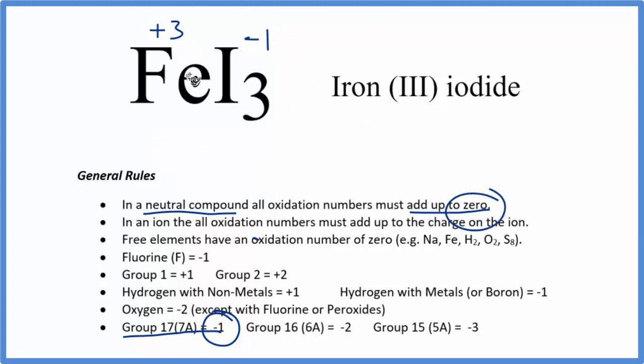So these are the oxidation numbers for each of the atoms in FeI3, iron(III) iodide. You'll also notice that it's called iron(III) iodide. That 3, we're talking about this number up here, plus 3.